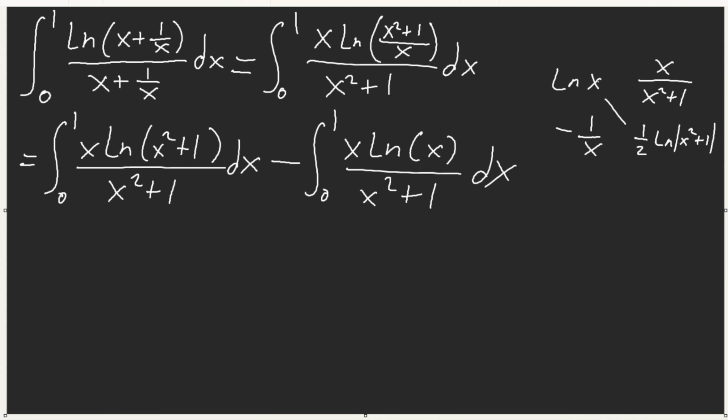For the integral of x·ln(x)/(x²+1), doing integration by parts with ln(x) and x/(x²+1): we get (-1/x) and (1/2)·ln(x²+1). Plugging in bounds 0 and 1 — at 1 you get 0; at 0 we apply L'Hôpital's rule since x·ln(x) → 0 as x → 0. So the boundary term is 0. The remaining integral is just u-substitution, giving (1/4)·ln²(2).